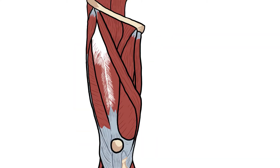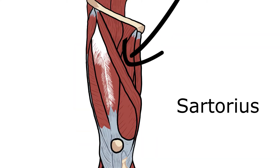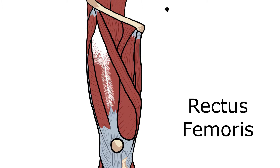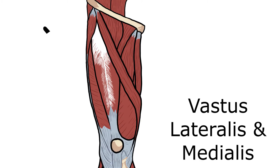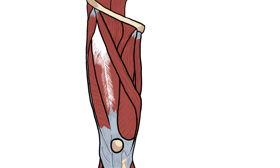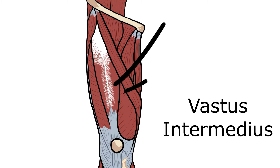Now this is the sartorius. Below this we've got three muscles: rectus femoris right in the centre, followed by vastus lateralis and medialis on the lateral and medial side respectively. You can also have vastus intermedius, which is just a little bit below rectus femoris.